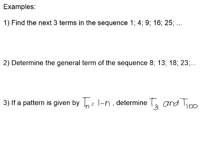Let's look at some examples. Find the next 3 terms in the sequence 1, 4, 9, 16, 25. We can see that those are the pattern of square numbers. These are in positions 1 through 5, so I need positions 6, 7, and 8. 6 squared is 36, 7 squared is 49, and 8 squared is 64.